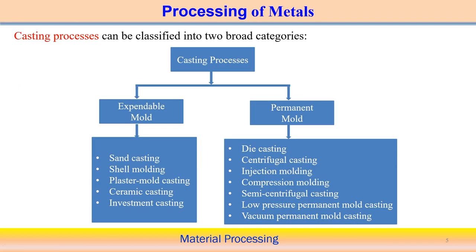Casting processes can be classified into two basic categories depending on the type of mold: expandable mold and permanent mold. Expandable molds — which you destroy after use — include sand casting, shell casting, plaster mold casting, ceramic casting, and investment casting. Permanent molds, which can be reused multiple times, give rise to techniques such as die casting, centrifugal casting, injection molding, compression molding, semi-centrifugal casting, low pressure permanent mold casting, and vacuum permanent mold casting.